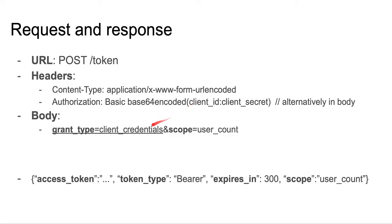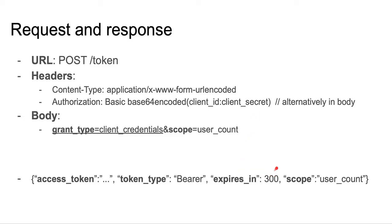The only required parameter is grant type equals client credentials, and scope is optional. The response will include the access token, token type, the expiration time or the lifetime expires in — this would be 300 seconds — and the granted scope.